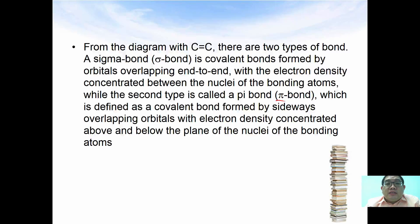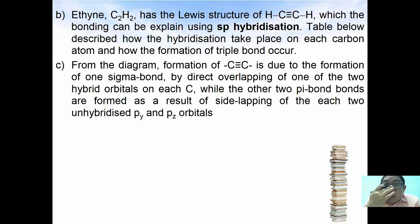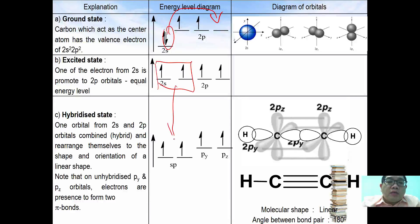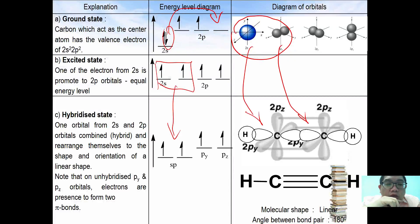Now for ethyne (C2H2), its bonding can be explained using sp hybridization. Carbon has the valence electronic configuration of 2s2 2p2. One electron from 2s excites to 2p so that 2s and 2p share equivalent energy levels. In sp hybridization, one s and one p orbital undergo hybridization, giving them a linear shape. This leaves two orbitals — py and pz — remaining unhybridized.